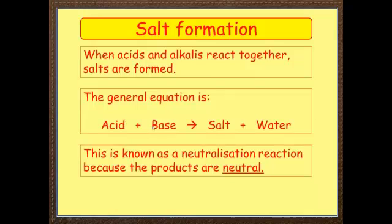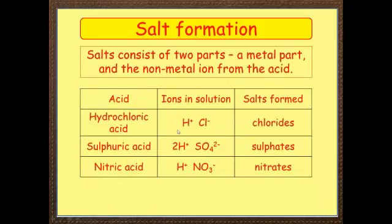Acid plus base, the base will contain a metal part. So hydrochloric acid, you know it's got hydrogen and chloride ions in solution, that will form chlorides. Sulfuric acid always forms sulfates. Nitric acid always forms nitrates. So if you add metal to any of these, you know what salt's being formed.